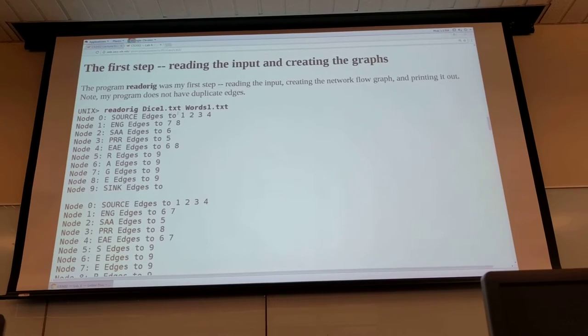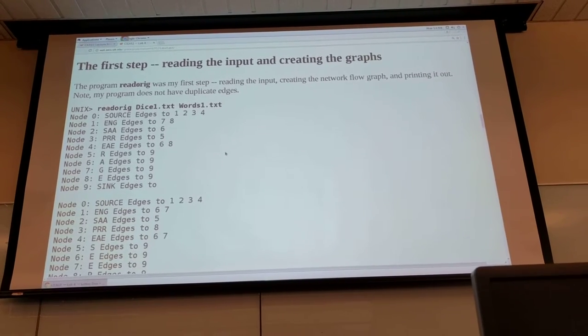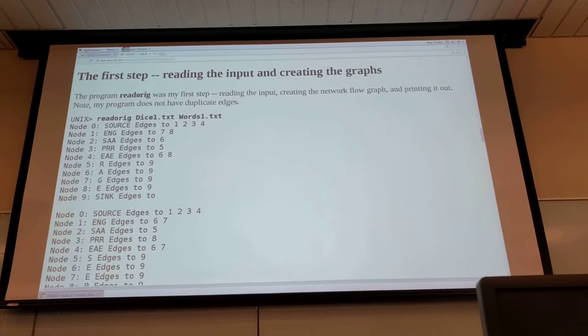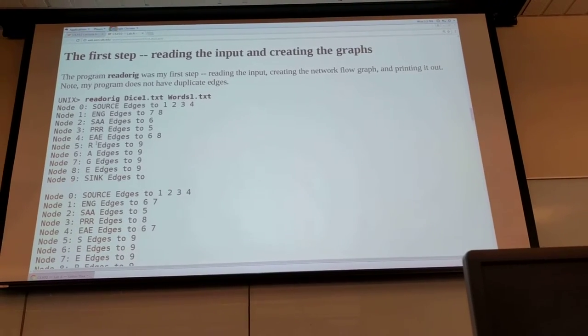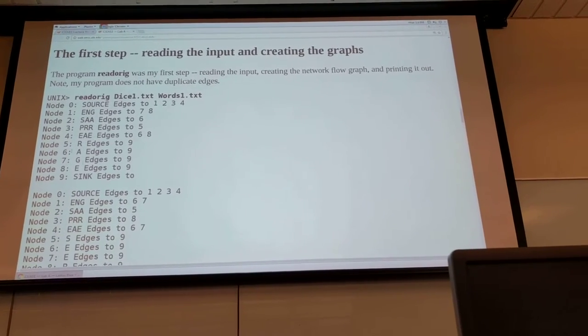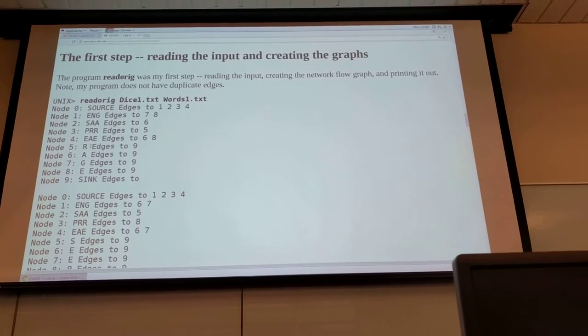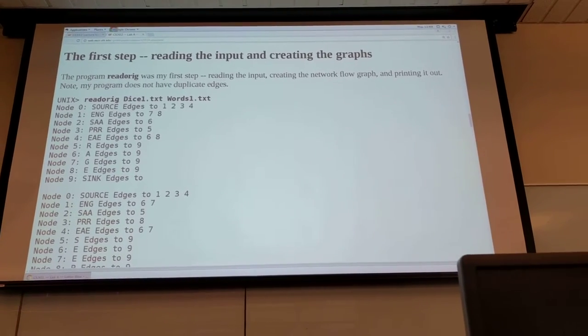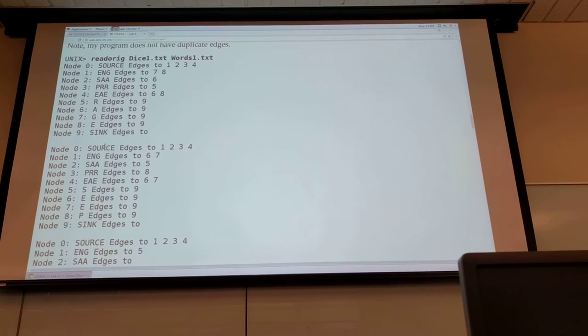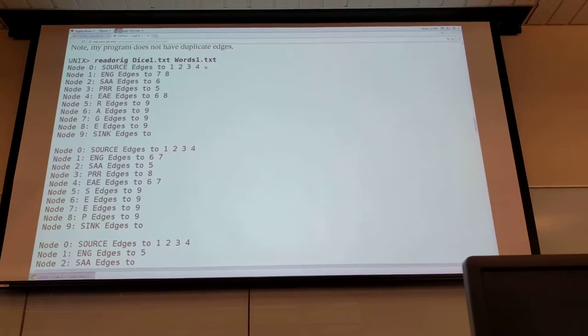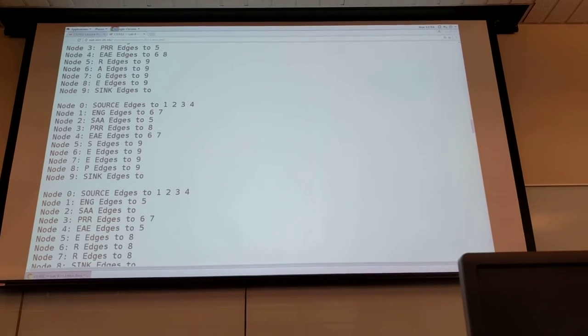So you can see from dice one and words, he first creates the source, he has the die for the first column and he connects it to the words of the first word or the letters of the first word in the second column and these are connected to the sink. And then as you can see for each word in the words file, he prints out the graph that he creates.